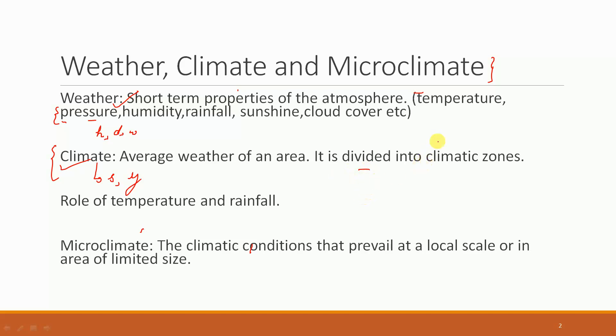First is the tropical zone which is from 0 to 20 degrees. Next is the subtropical which is from 20 to 40. Then we have the temperate zone which is from 40 to 60. And last is the Arctic and Antarctic zone which is from 60 to 80 degrees. This is the latitudinal distribution.